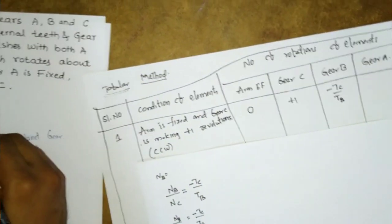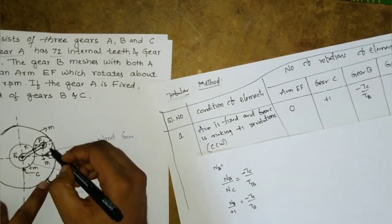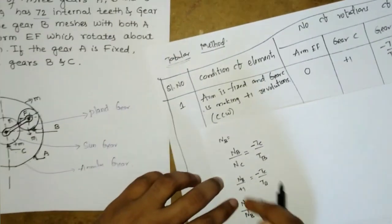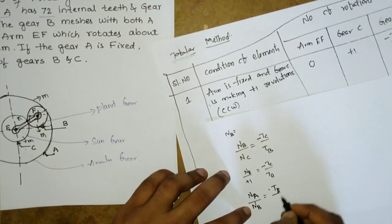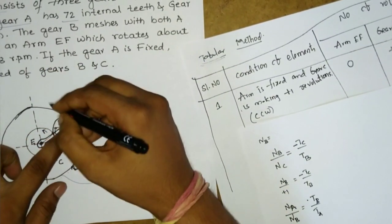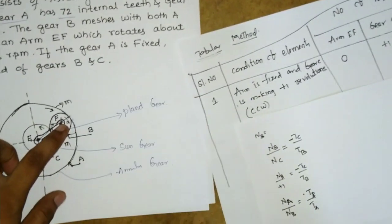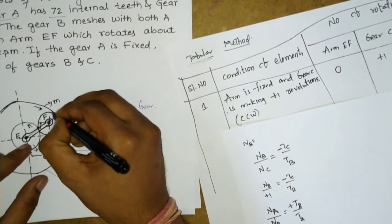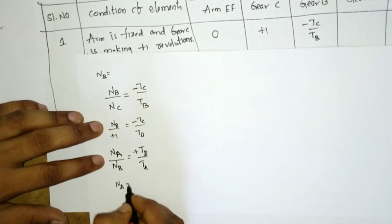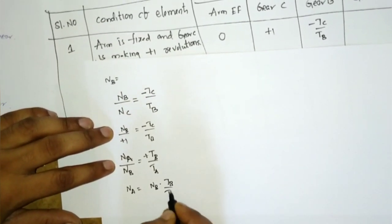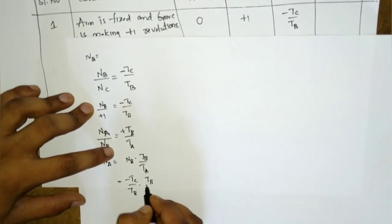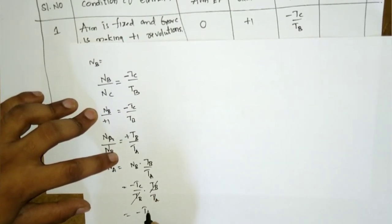For gear A: NA/NB = +TB/TA. The positive sign is because gear B and gear A are in internal mesh, so they rotate in the same direction. Substituting NB = −TC/TB, we get: NA = (−TC/TB) × (TB/TA). TB cancels, giving NA = −TC/TA.